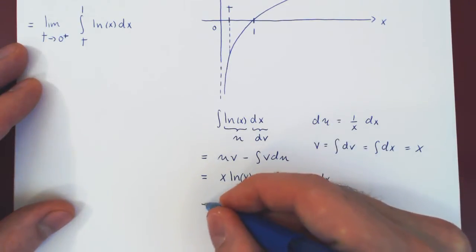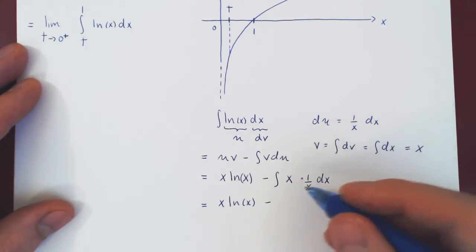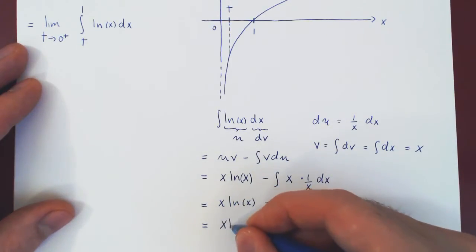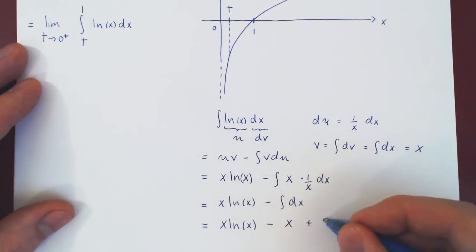And now we have a trivial integral. x times 1 over x is 1, and so we have the integral of dx, which is, of course, simply x, plus, of course, c.